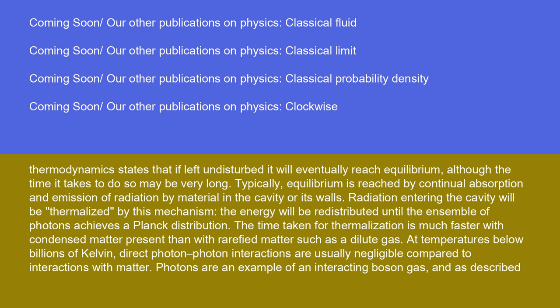Typically, equilibrium is reached by continual absorption and emission of radiation by material in the cavity or its walls. Radiation entering the cavity will be thermalized by this mechanism, and the energy will be redistributed until the ensemble of photons achieves a Planck distribution. The time taken for thermalization is much faster with condensed matter present than with rarefied matter, such as a dilute gas. At temperatures below billions of Kelvin, direct photon-photon interactions are usually negligible compared to interactions with matter.